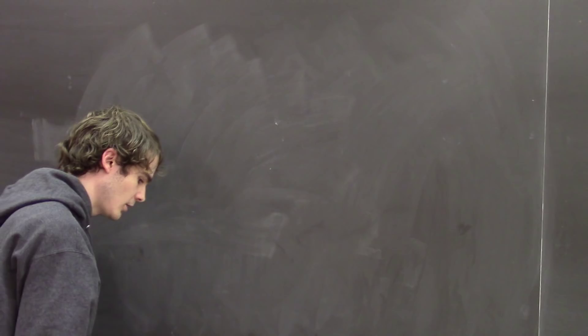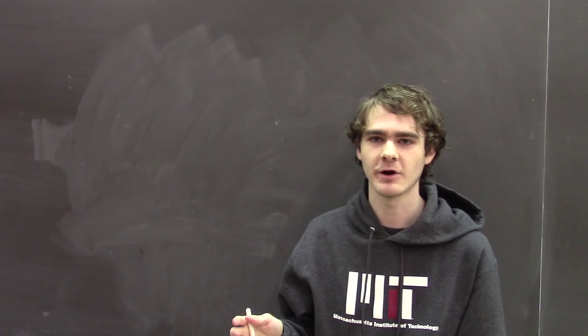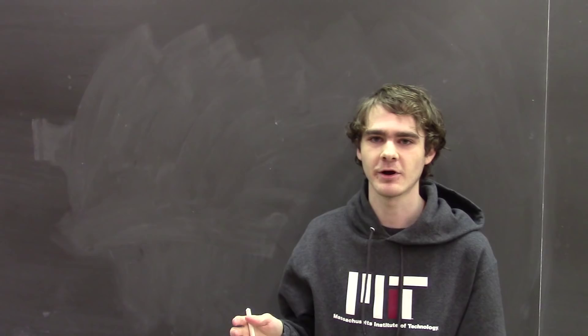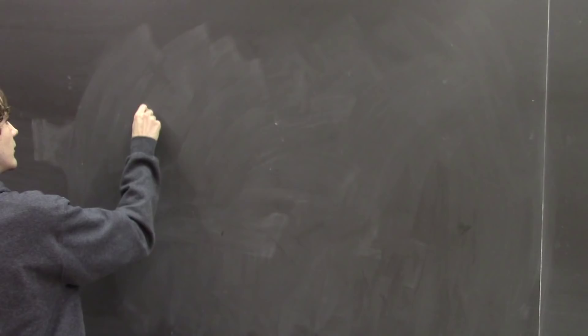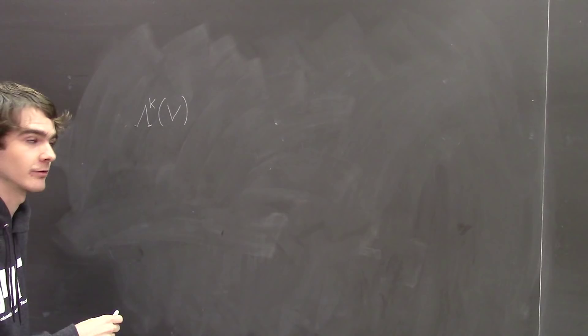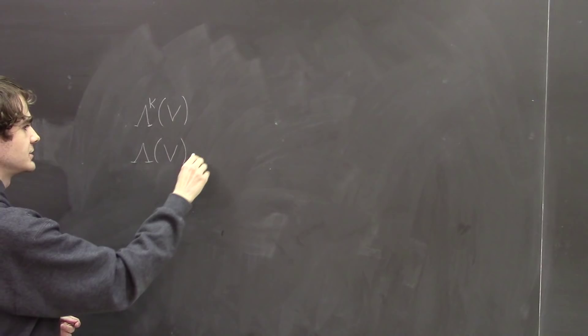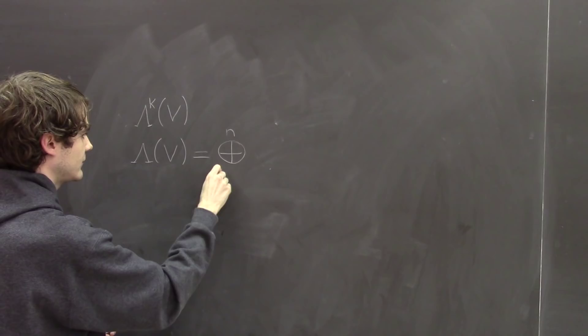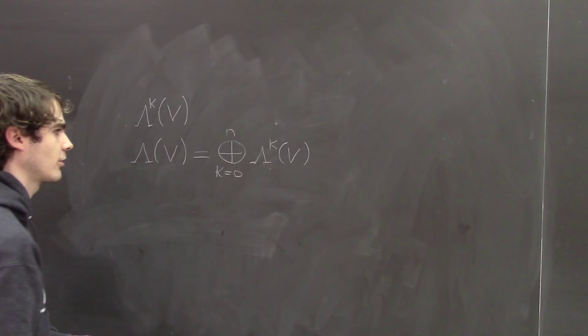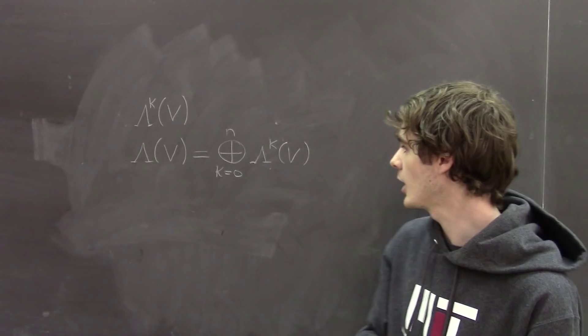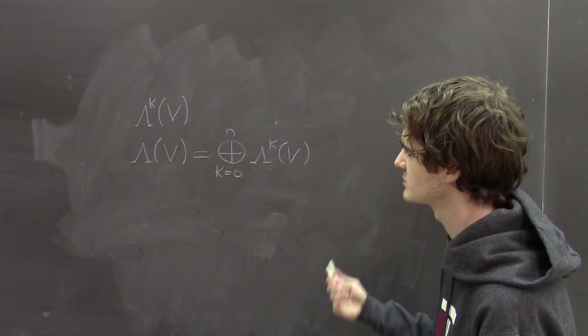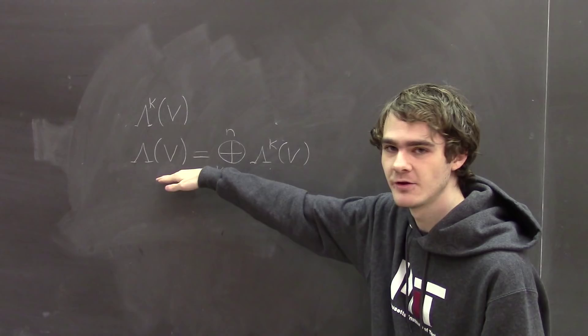There's a similar explanation for the exterior product. You've probably seen Λᵏ(V), the kth exterior power of V, or the full exterior algebra Λ(V), which is the direct sum of all these exterior powers — it's a graded algebra with multiplication given by the wedge product. This space is what's used to formalize integration on manifolds: a differential form lets you measure volumes of infinitesimal k-dimensional parallelepipeds at a point on the manifold.